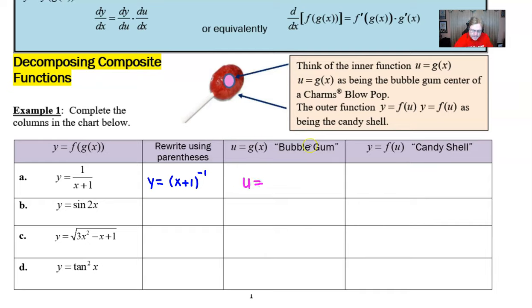I'm going to call this some bubblegum here right now, so we can let u equal the bubblegum center, the middle, the inner part, and that's going to be the x + 1. Basically, the expression that you see inside the parentheses will be your u.